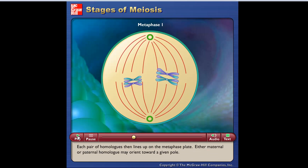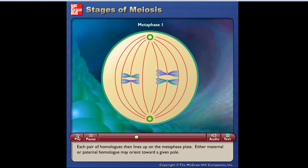Each pair of homologues then lines up on the metaphase plate. Either the maternal or paternal homologue may orient toward a given pole.